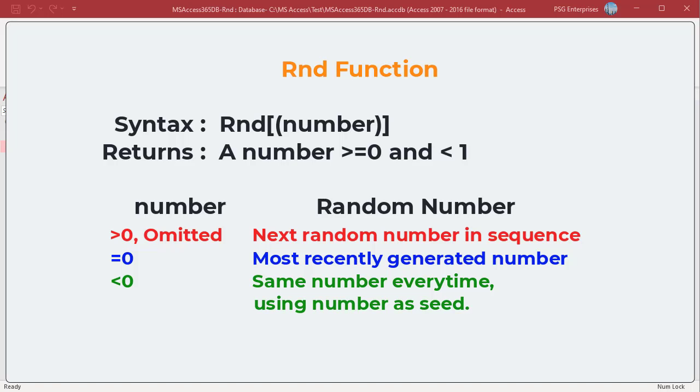To generate a random number in Access, you can use the RND function. Here is the syntax. The optional number argument is a single or any valid numeric expression. The RND function returns a random number that is greater than or equal to 0 and less than 1.